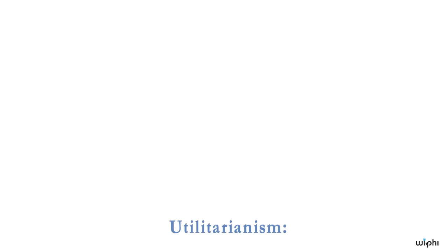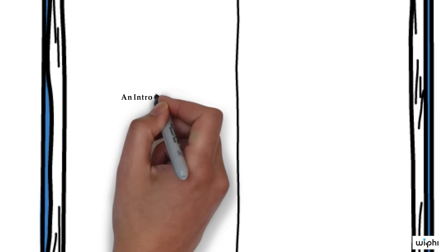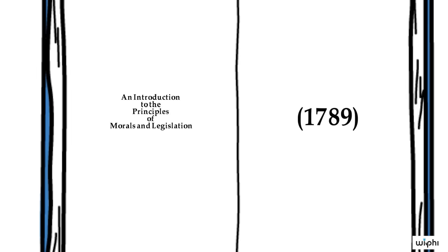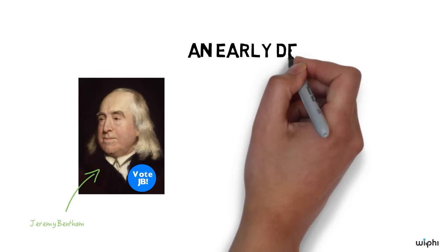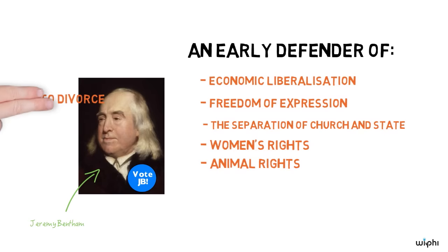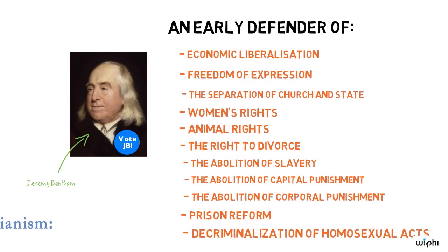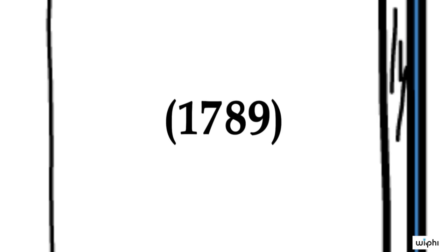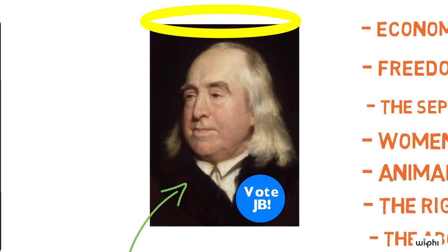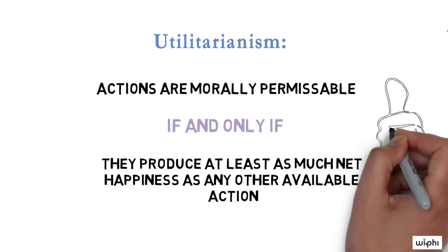Utilitarianism has been around for a long time, but it gained a lot in prominence and popularity in the late 18th century, due in part to the work of a British philosopher named Jeremy Bentham. Bentham published a long defense of utilitarianism called An Introduction to the Principles of Morals and Legislation in 1789, and he was also a very politically and socially active guy. He was an early defender of economic liberalization, freedom of expression, the separation of church and state, women's rights, animal rights, the right to divorce, the abolition of slavery, the abolition of capital punishment, the abolition of corporal punishment, prison reform, and even the decriminalization of homosexual acts — remember, this was 1789. Bentham recognized the moral importance of these rights, many of which are now uncontroversial. In this, he was well ahead of his time, and in large part, I would think, because of his embrace of utilitarianism. That, for me, counts heavily in favor of it as a moral theory.